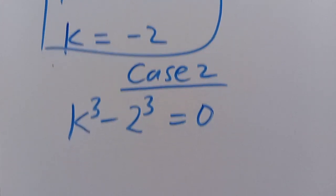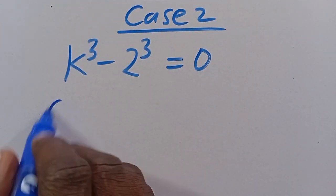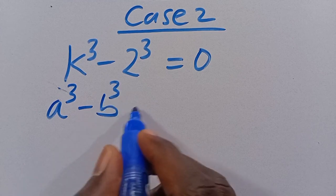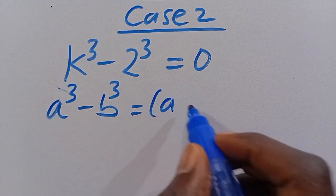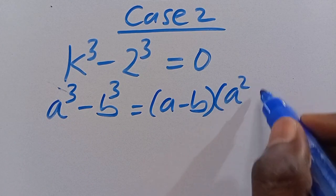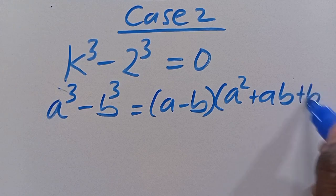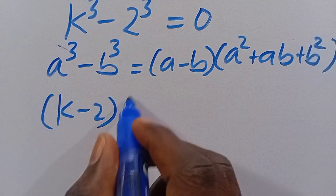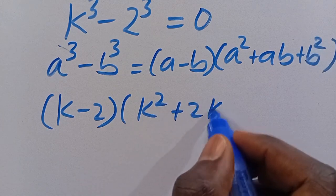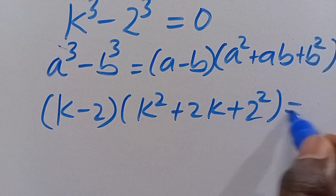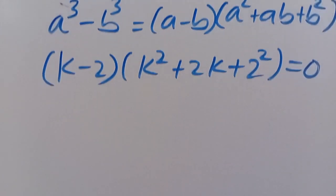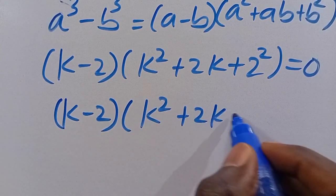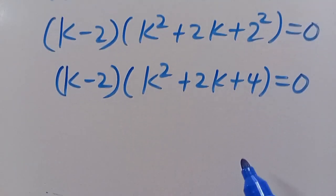From Case 2, we have a to the power of 3 minus b to the power of 3, which satisfies a minus b multiplied by a squared plus ab plus b squared. So here we get k minus 2 multiplied by k squared plus 2k plus 2 squared equals 0.